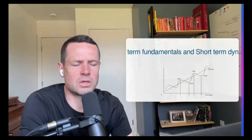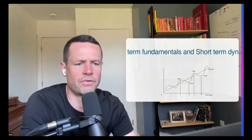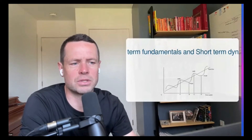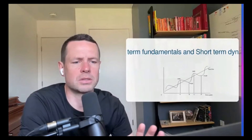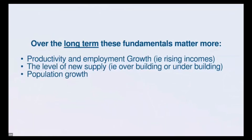The slide should say long-term fundamentals and short-term dynamics — my apologies for the formatting issue. These are the things that drive real estate. If you look at that squiggly line and that straight line, in this particular case the straight line represents the long-term fundamentals. That line could go straight across, go down, or as in this situation, go up. There are cyclical movements within a long-term cycle, and it's really important to understand this distinction.